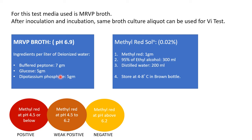The broth starts at neutral pH. If the culture produces acid, the pH will drop. If the pH is 4.5 or below, methyl red turns red — this is a positive result. If the pH is between 4.5 and 6.2, the color observed is orange — considered weak positive. If the pH is above 6.2 (alkaline), methyl red shows yellow — that is negative.